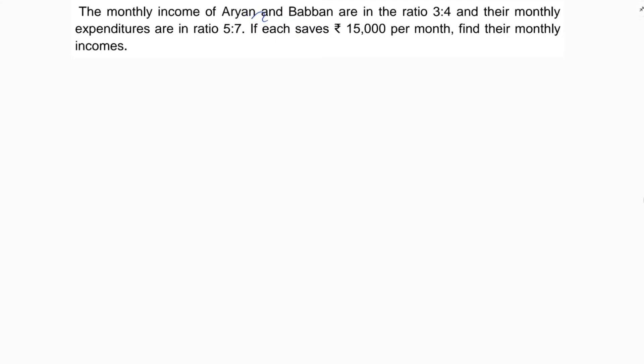The monthly income of Aryan and Babban are in the ratio 3 is to 4, and their monthly expenditures are in the ratio 5 is to 7. If each saves rupees 15,000 per month, find their monthly incomes.